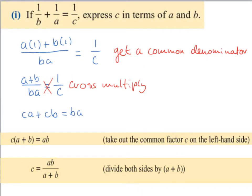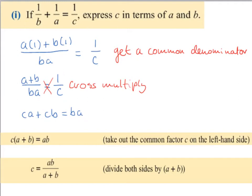Another way of doing this is to change the left-hand side — combining 1 over b plus 1 over a into a single fraction. We get a common denominator of ba, giving (a plus b) over ba equals 1 over c. Next we cross-multiply: (a plus b) times c equals ba times 1, which gives ac plus bc equals ba. The rest is the same as before — factorize the left-hand side and divide both sides by (a plus b).